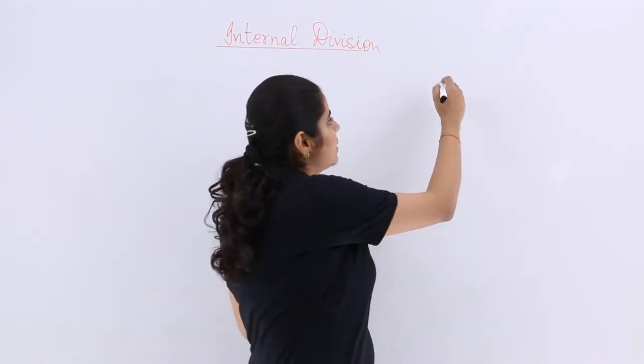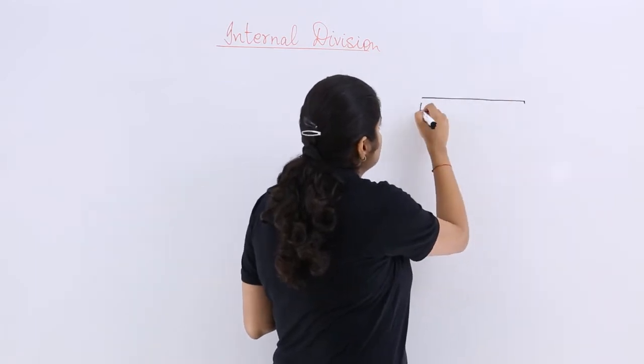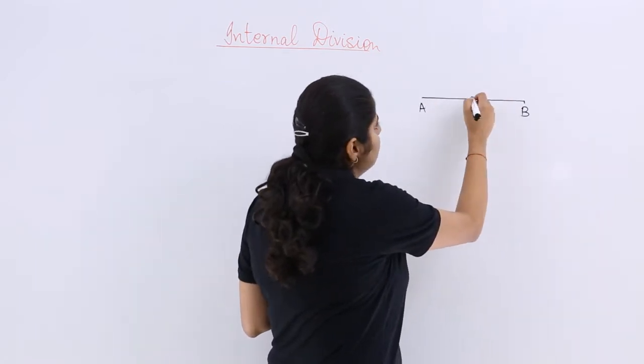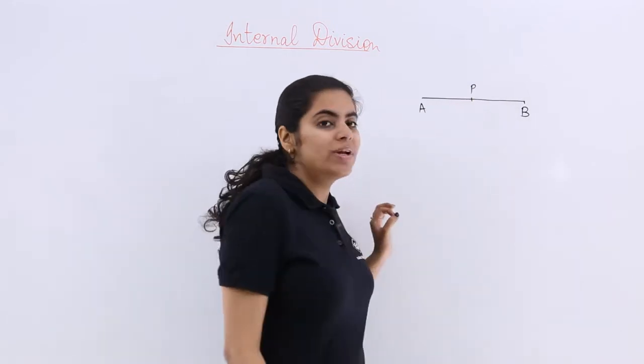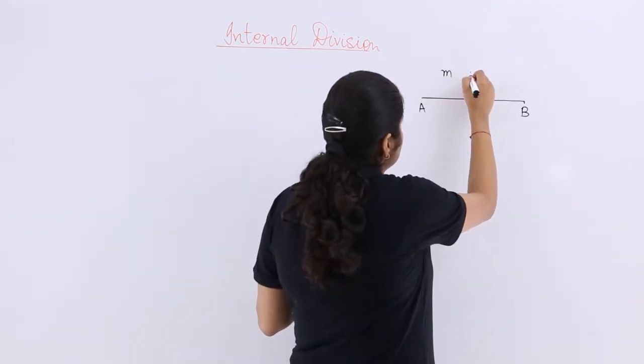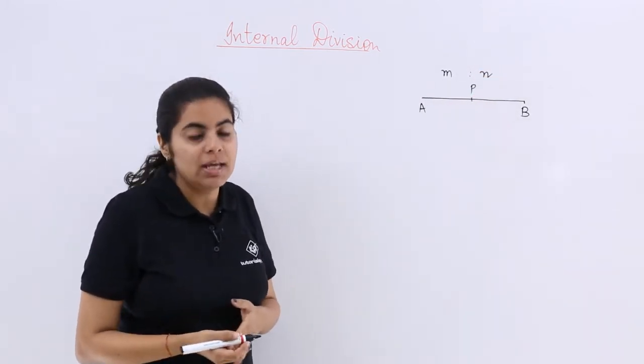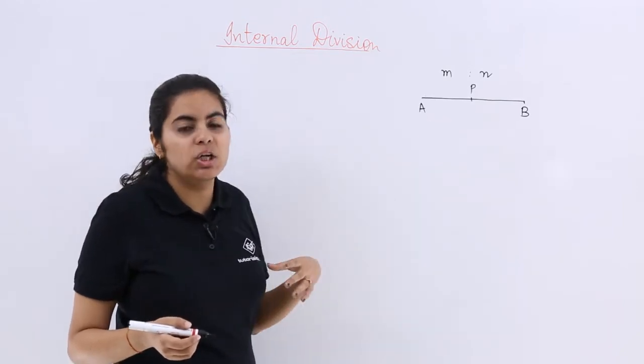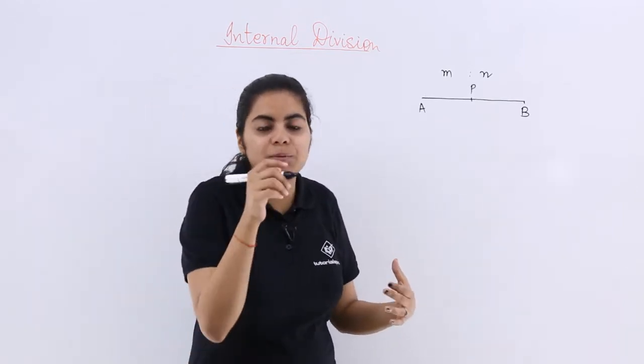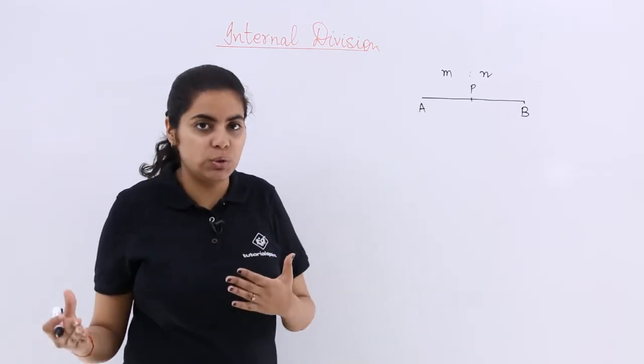If you have a line segment say AB, so AB is my given line segment and if there is a point P which divides the line segment into the ratio of M is to N, this point can be P or C or anything. Then what will be the position vector of P? Definitely the position vector of P is actually associated with the origin.